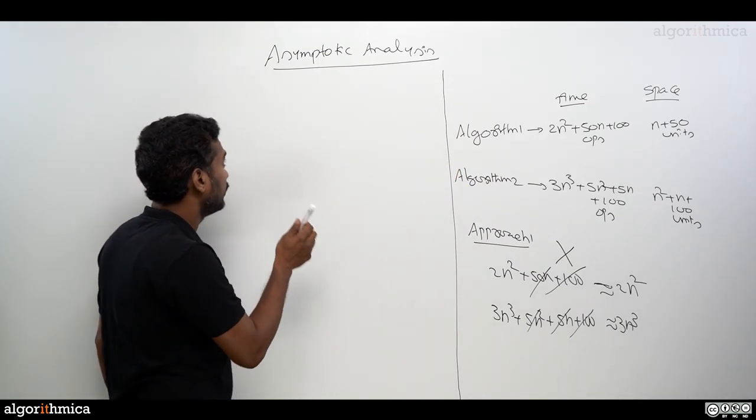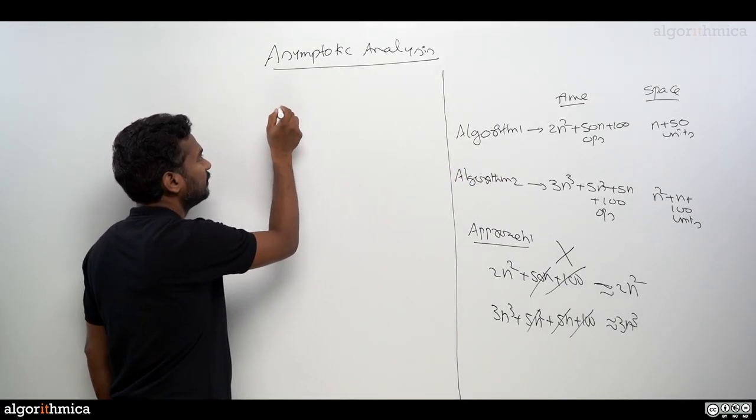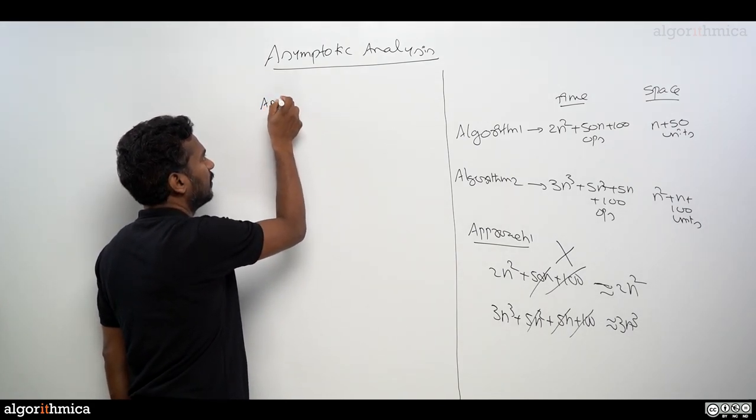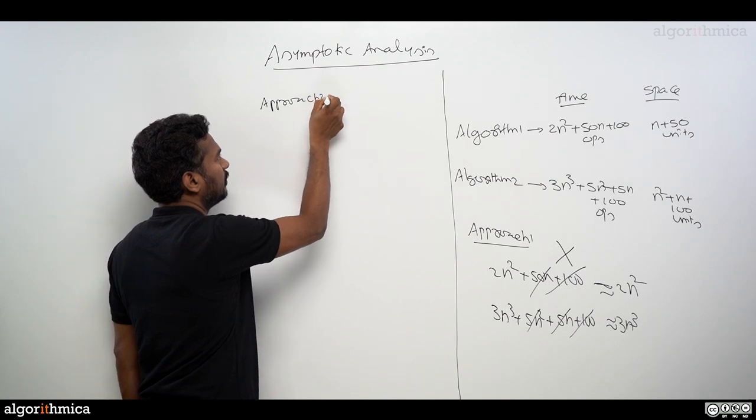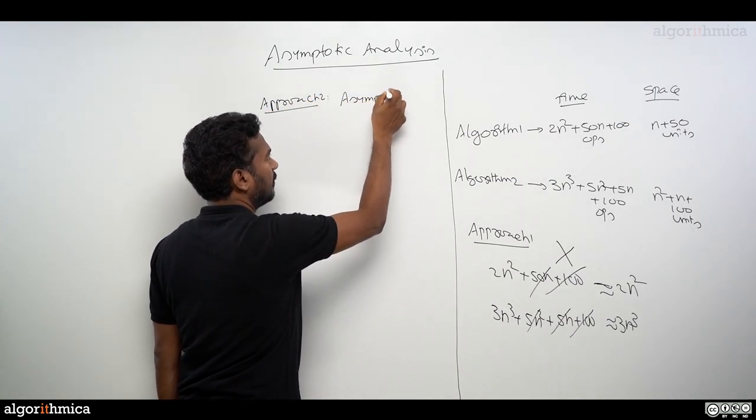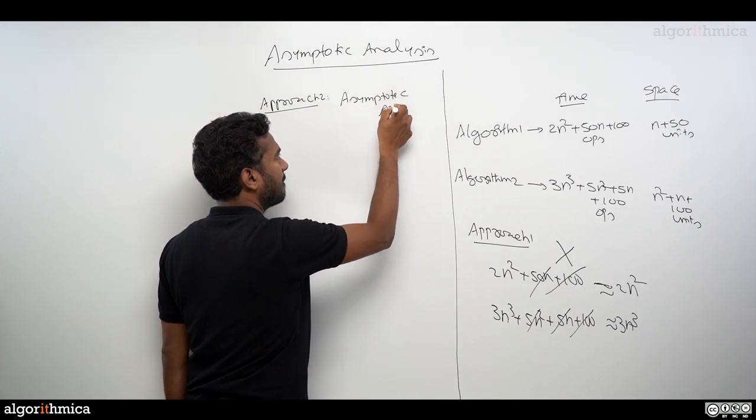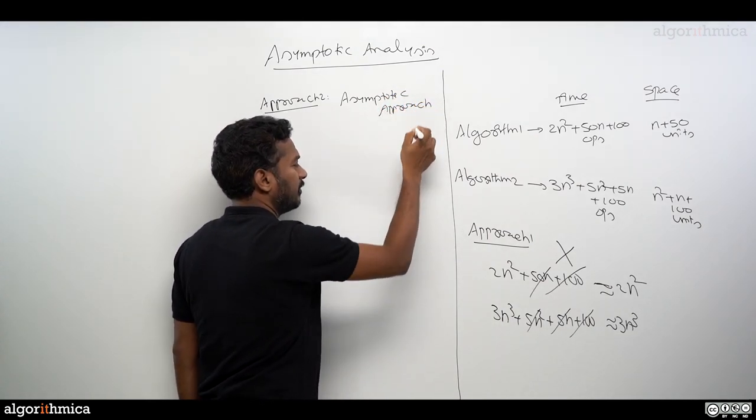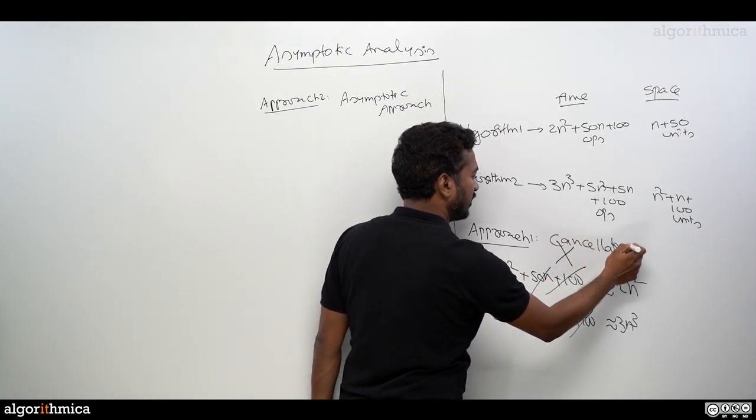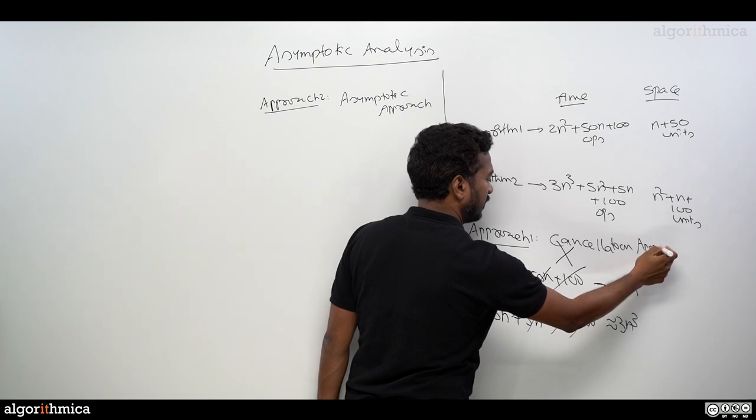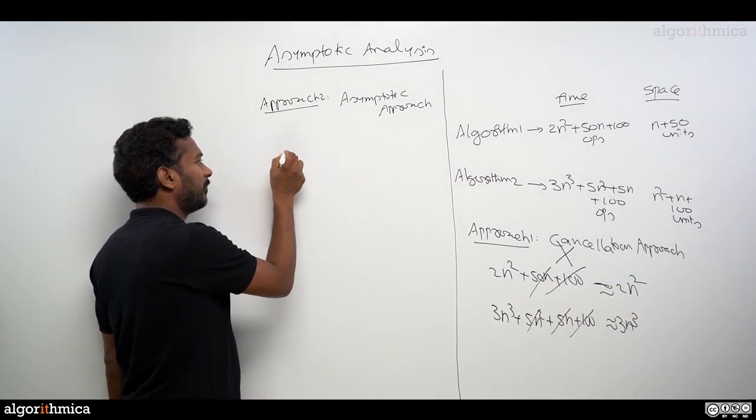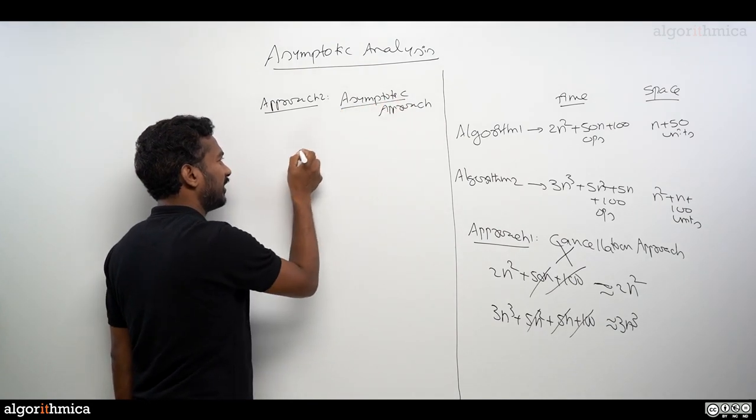How can you simplify that? That approach we call Approach 2. Let me write this Approach 2 here. Approach 2 is going to be an asymptotic approach. If you want to call this approach, people can use a cancellation approach. This is completely meaningless.